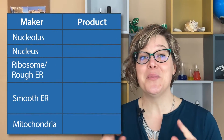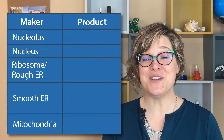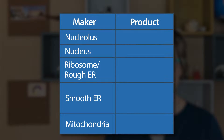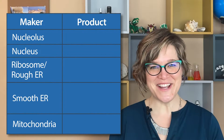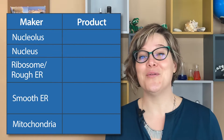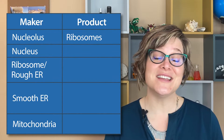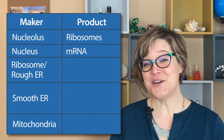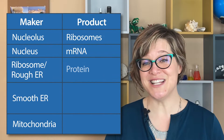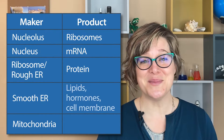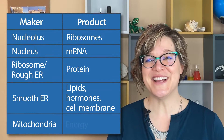Let's check in. Can you match the maker with the thing that it makes? Working from the center outward: the nucleolus makes the ribosomes, the nucleus makes mRNA, ribosomes and the rough ER make proteins, the smooth ER makes lipids and hormones, and the mitochondria make energy.